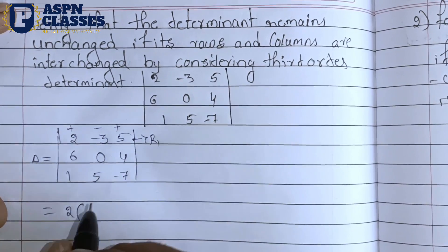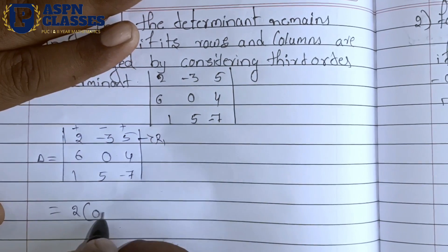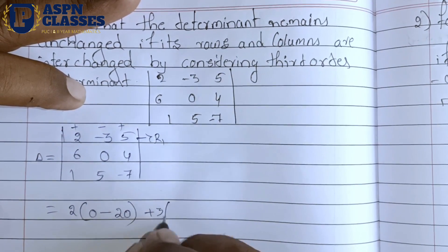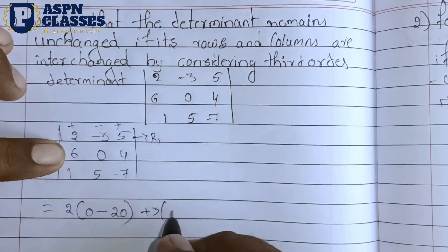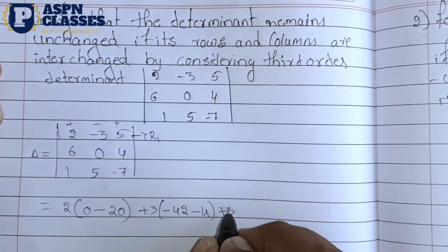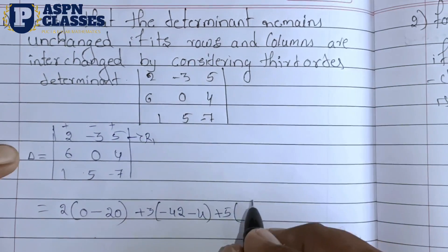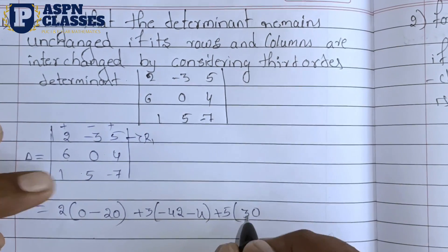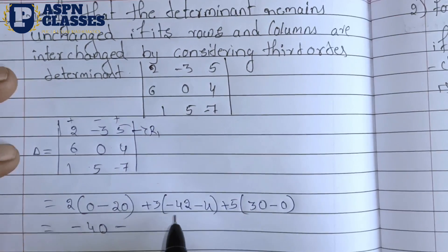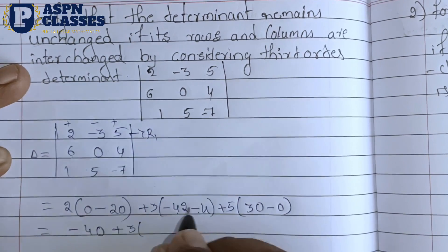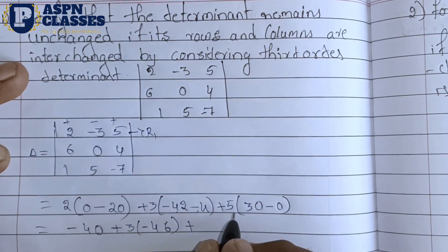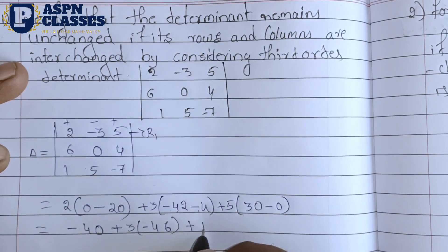So the result is 2 into bracket. We cancel these results — the result will be 0. It will cancel: minus 5 into 4 is 20. Again, minus minus plus 3, cancel these results — 6 into 7 is 42. Again minus 4 into 1. Lastly, plus 5, cancel these results — 6 into 5 is 30, and 1 into 0 is 0. This is completely simplified.